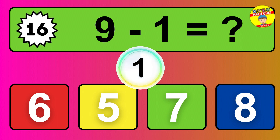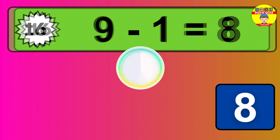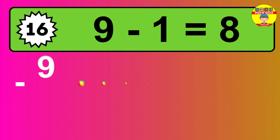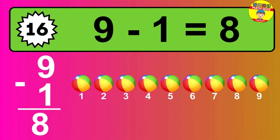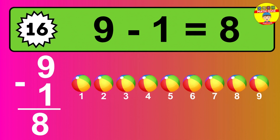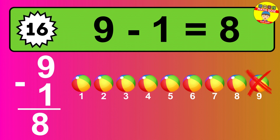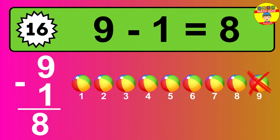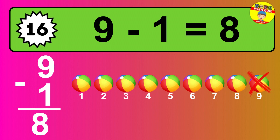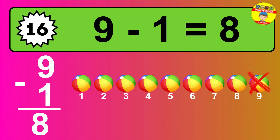Question 16: 9 minus 1 equals what? The answer is 9 minus 1 is 8. Let's count it: 1, 2, 3, 4, 5, 6, 7, 8.